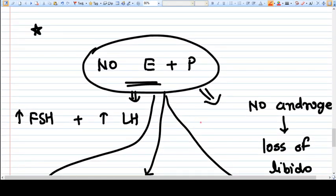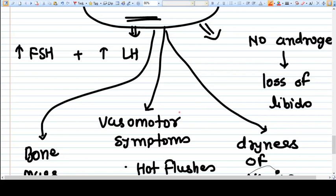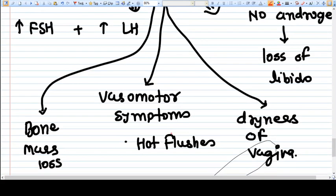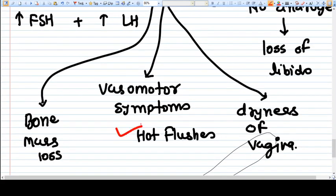When there is no estrogen and progesterone, various vasomotor symptoms develop like hot flushes. You very well know that estrogen and progesterone are responsible for resorption of the bone, so bone mass is lost.